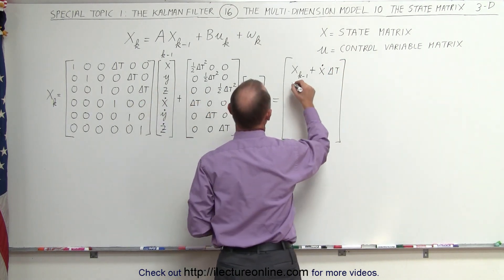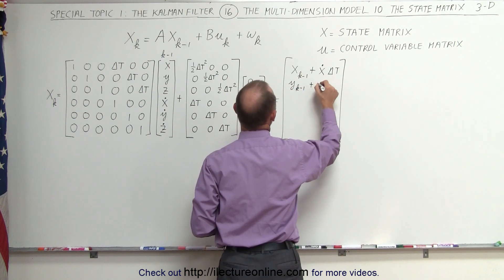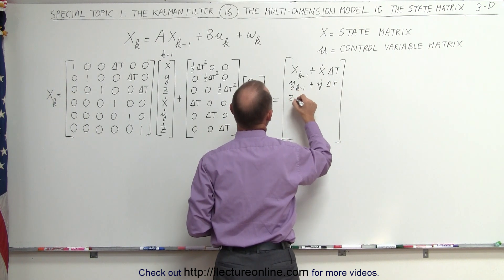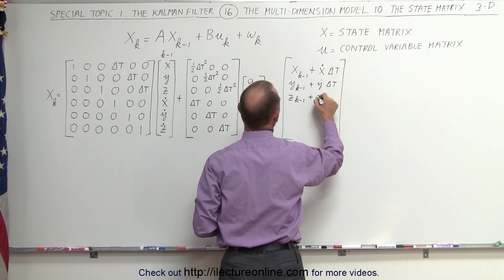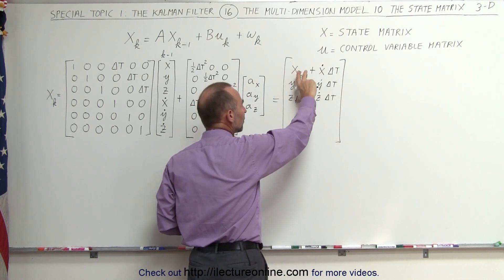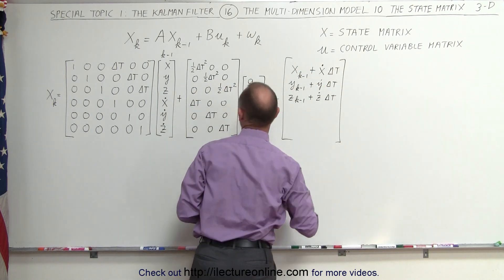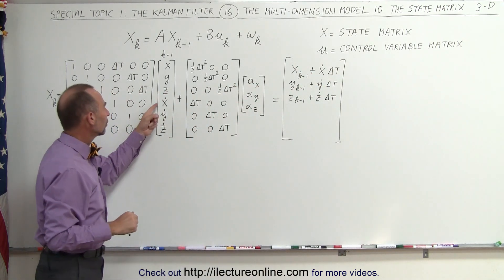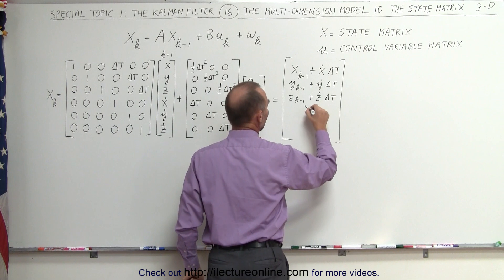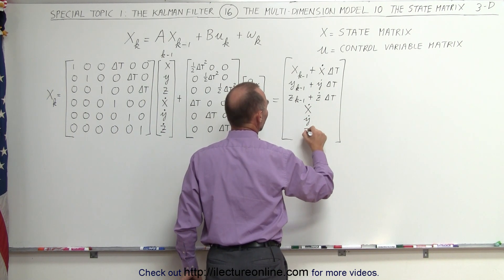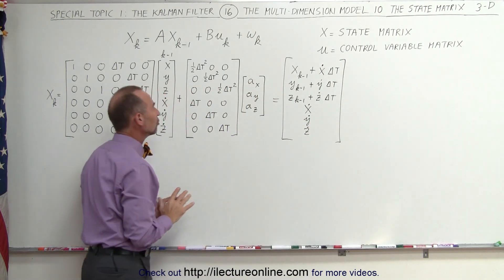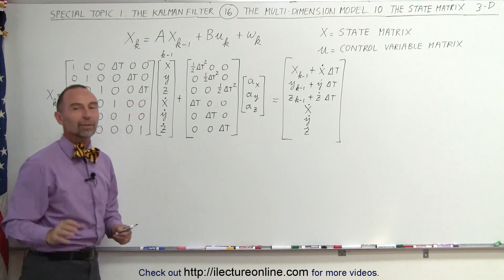We do that for the y direction: we get y from the previous state plus the velocity in the y direction times delta t. And we get the z position from the previous state plus the velocity in the z direction times delta t. This is the adjustment for position from the previous state to the current state due to velocities in the three directions. Now for the x, y, and z velocities — notice that we only multiply times 1, so we get an x velocity, a y velocity, and a z velocity, unchanged because nothing in this matrix causes them to change. The change in velocity will come from the acceleration from the control variables.